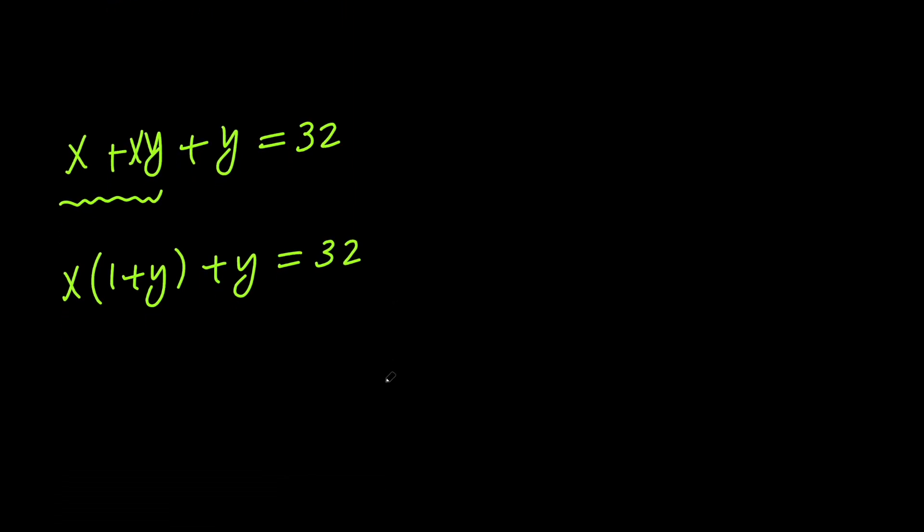But if you look closely, you can see that we have 1 plus y over here and y over here. So if I go ahead and add 1 to both sides, I will have 1 plus y in both of these two terms, and I can go ahead and take it out.